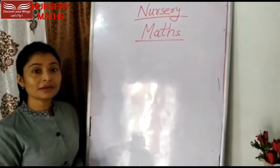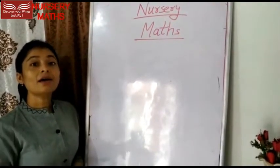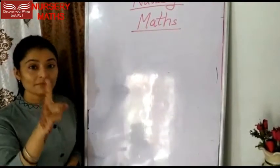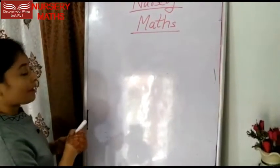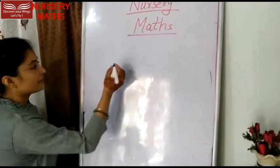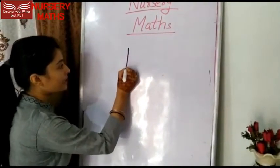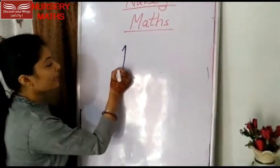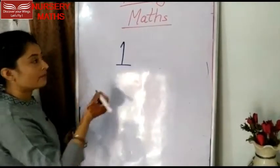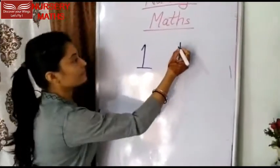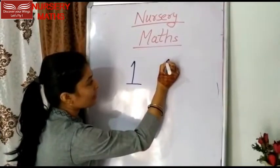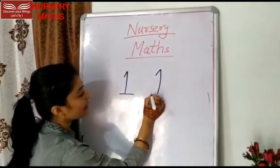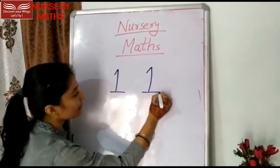So, our first counting number is number 1. I will write it. Number 1: standing line, small slanting line and sleeping line. One more time. Standing line, small slanting line and sleeping line.